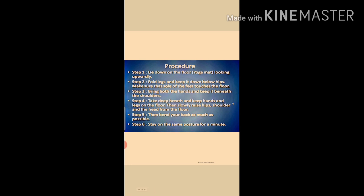Procedure of Chakrasana: Lie flat on the back. Draw the legs until the heels are close to the hips and the soles touch the ground. The gap between the legs should be 4 to 6 inches. Place the palms on the floor beside the head with the fingers pointing towards the shoulders. This is the starting position.